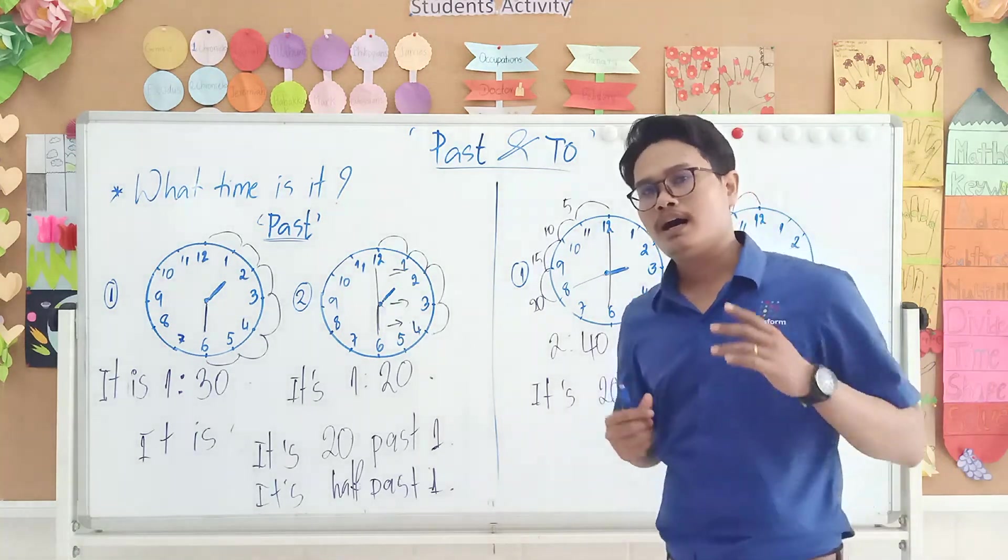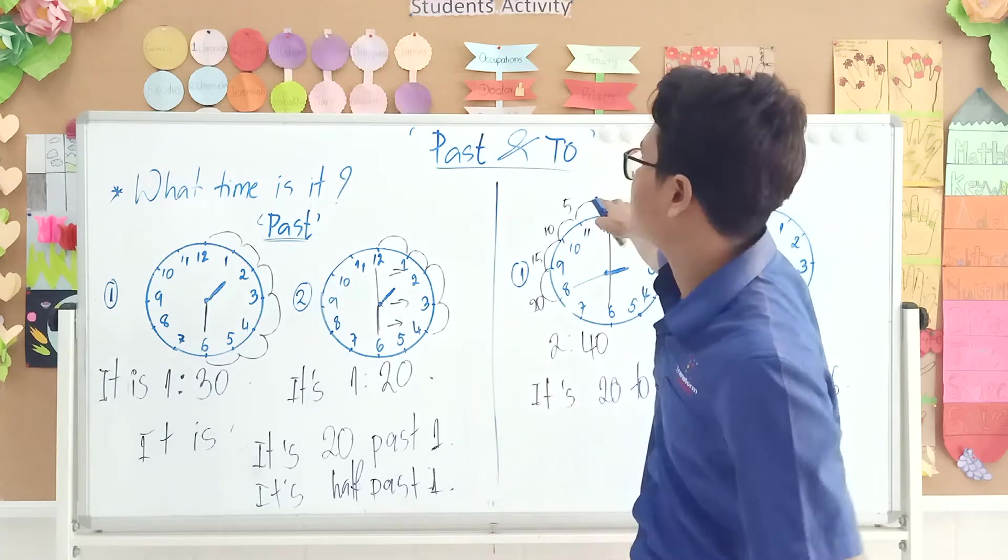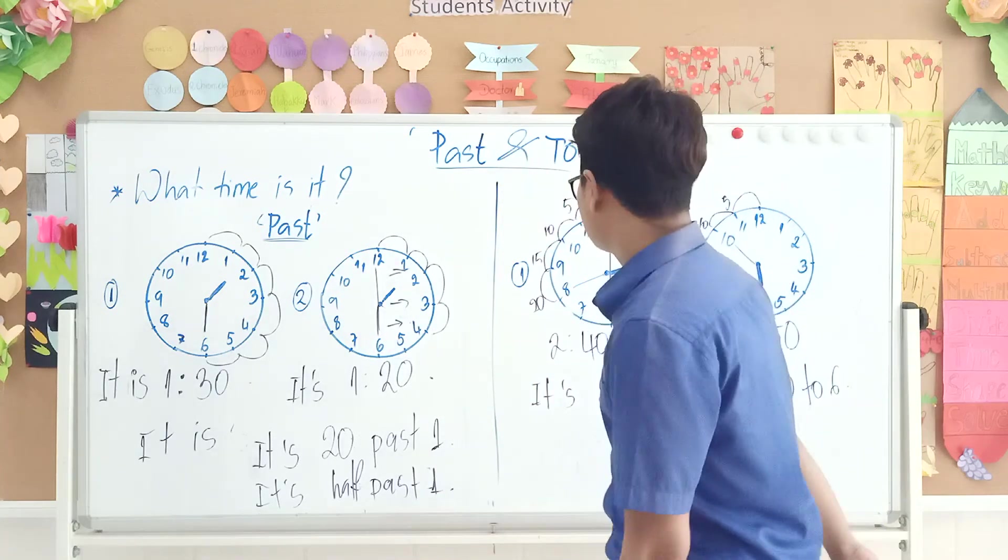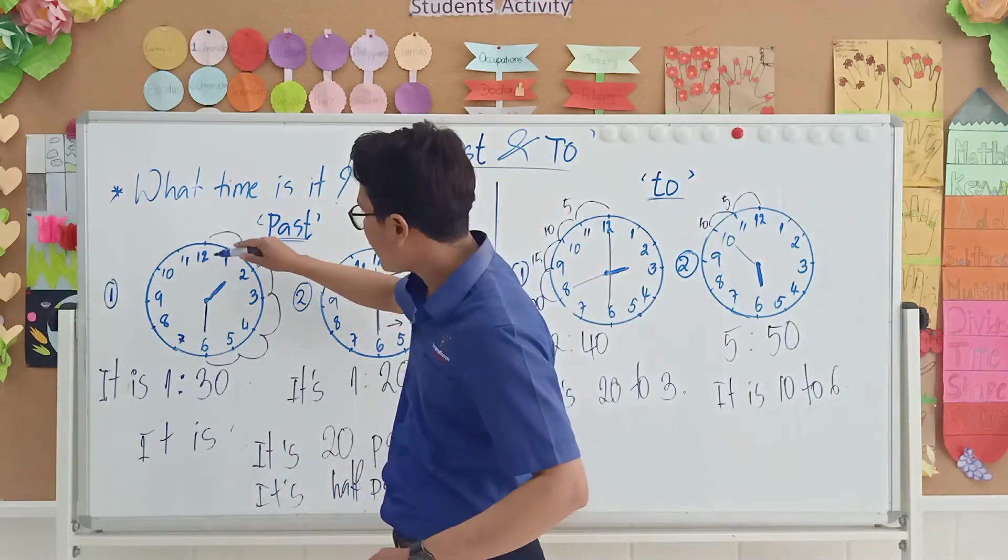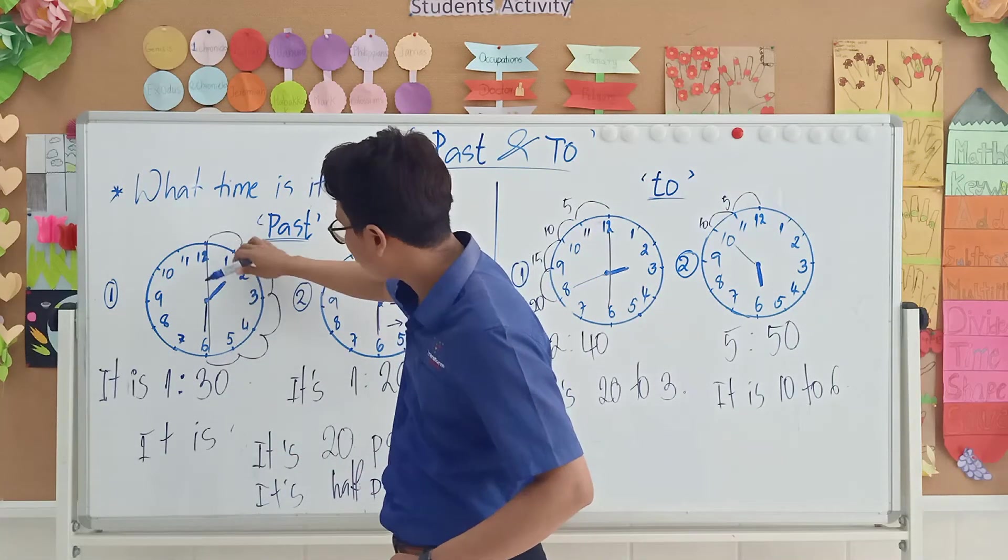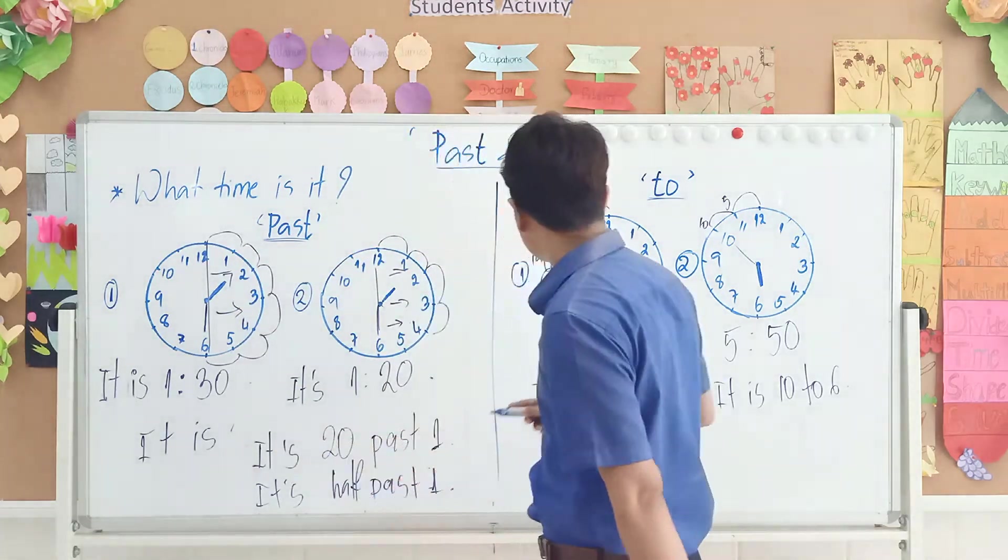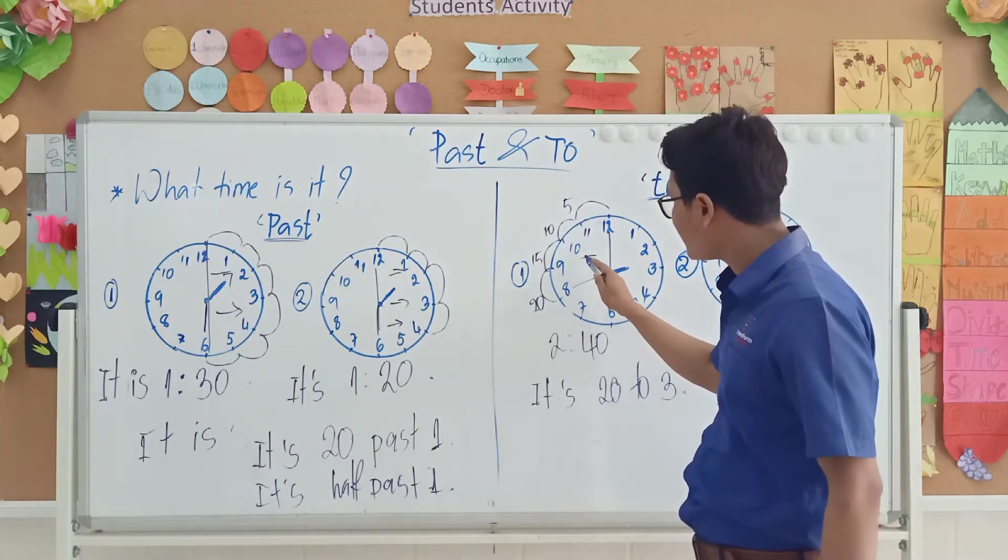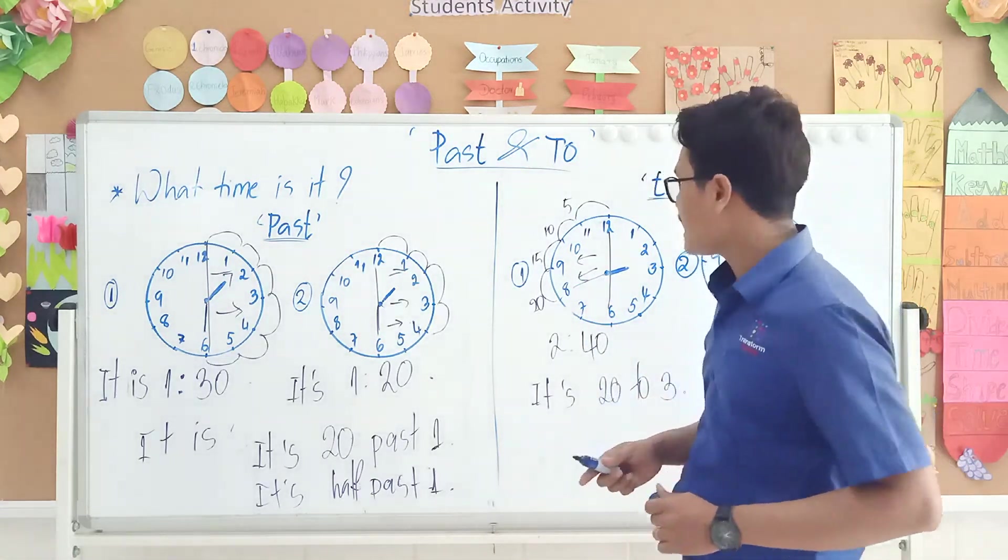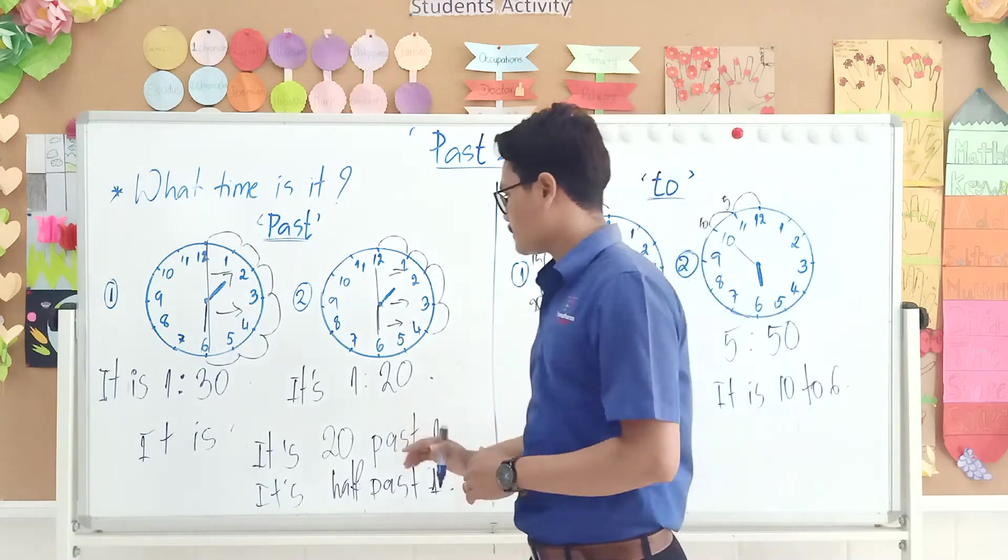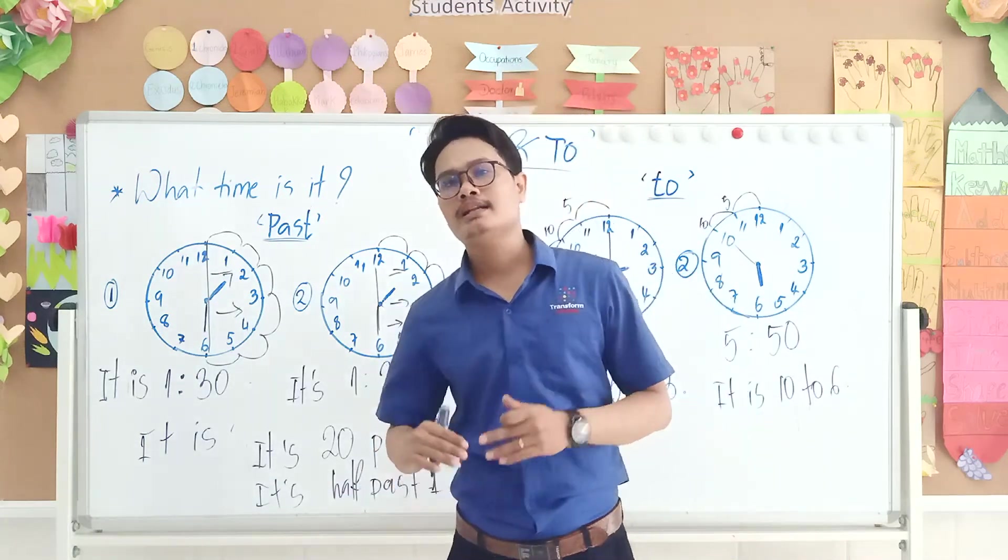So I hope all of this, you know how to tell time with the word past and to. Remember that when you see the long hand on this side, for example the long hand on this side, you use past. But when you see the long hand on this side, you use 'to'. Do you understand? So it is finished with the lesson today about telling the time.